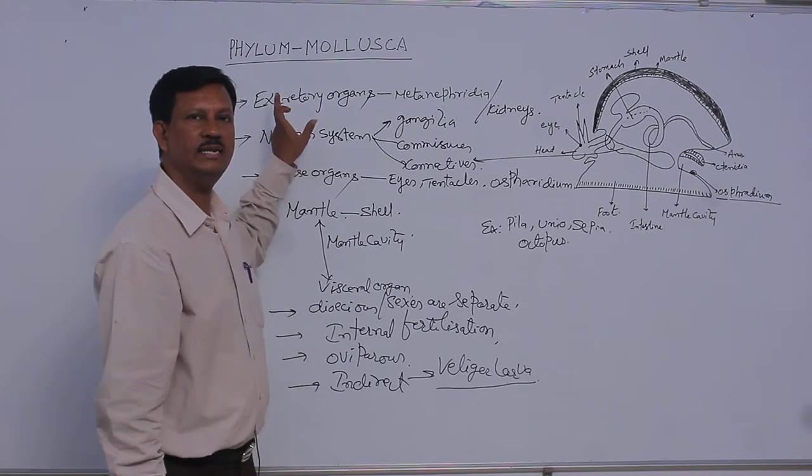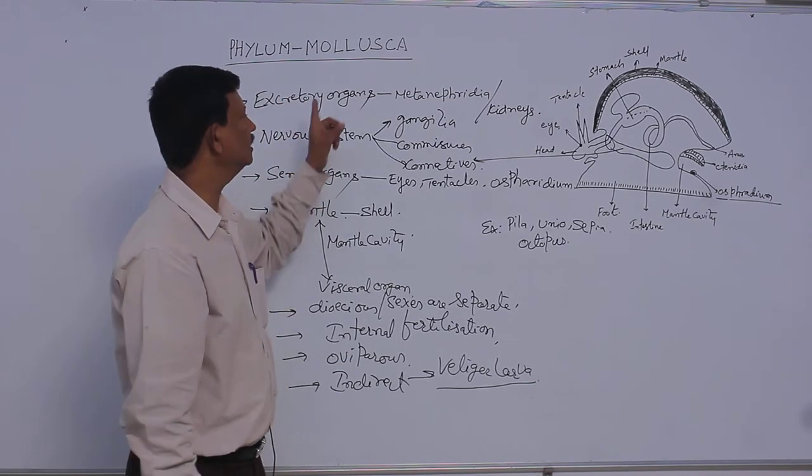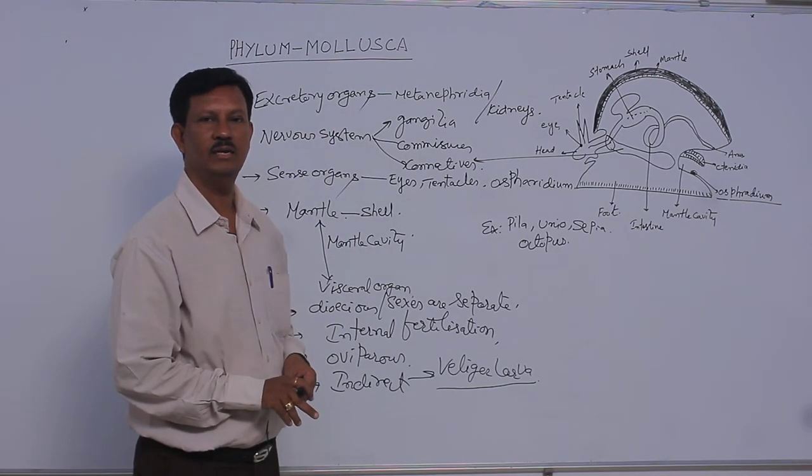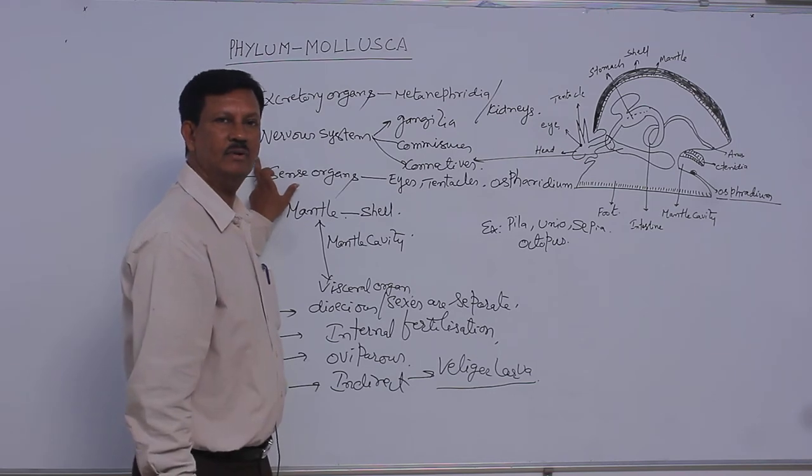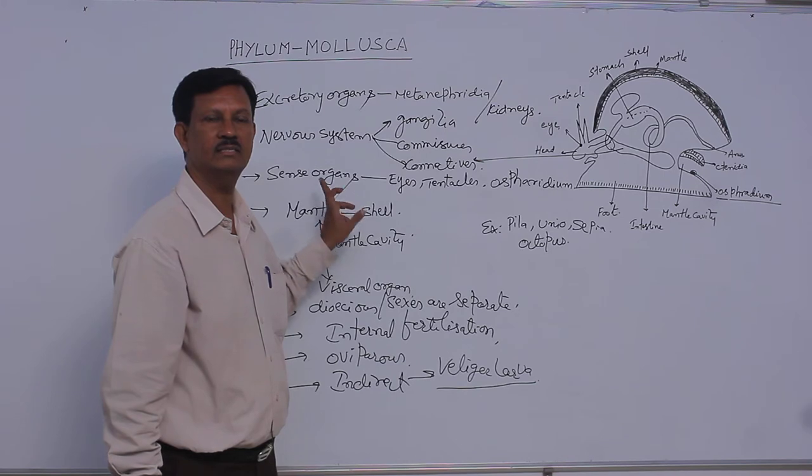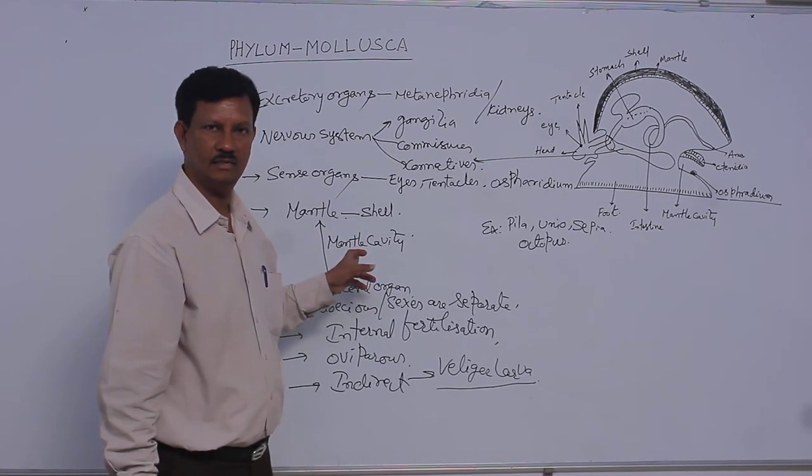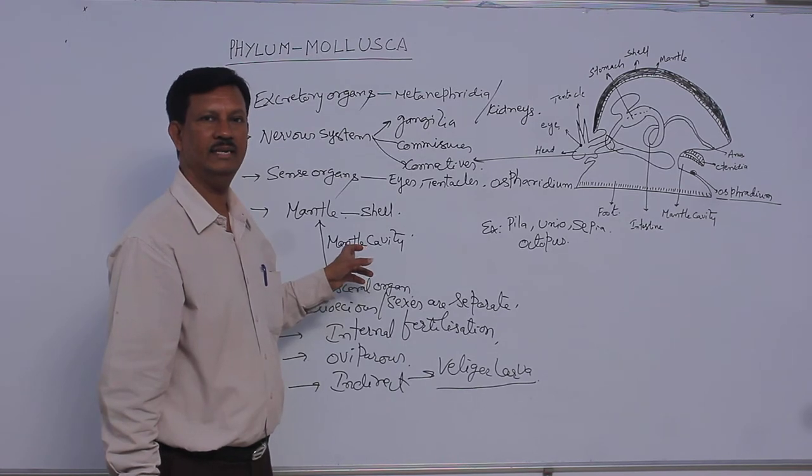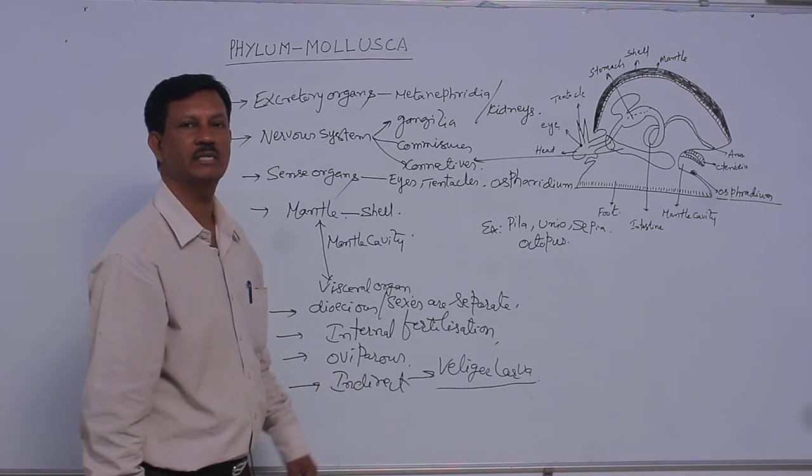They are mostly aquatic animals, mostly found in the marine water. This is the second largest phylum in the animal kingdom. And they show bilateral symmetry. Some animals also show asymmetry. Triploblastic animals and coelomate animals. Body is externally covered by mantle. In between the mantle and visceral organs, mantle cavity is present.